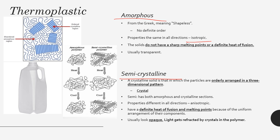On the other hand, we have semicrystalline polymers. A crystalline solid is one in which all particles are ordered in a 3D pattern — just like the ordered crystal structures in metals. Crystalline polymers have some order in the way their molecules are oriented, but there are no 100% crystalline polymers — only semicrystalline ones. As you can see in the picture, some chains are randomly oriented while other sections are neatly folded and arranged into small crystals.